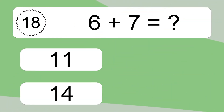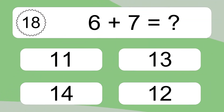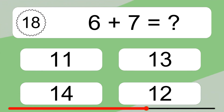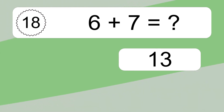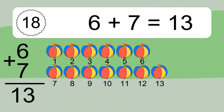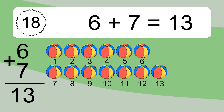6 plus 7 equals what? 6 plus 7 equals 13. Let's count it. 1, 2, 3, 4, 5, 6, 7, 8, 9, 10.